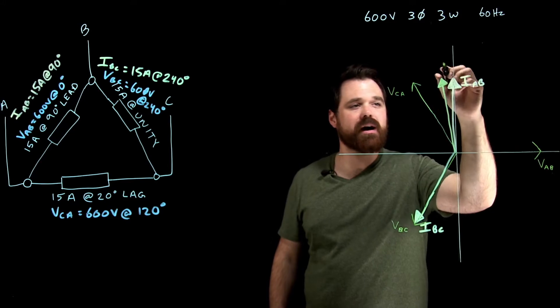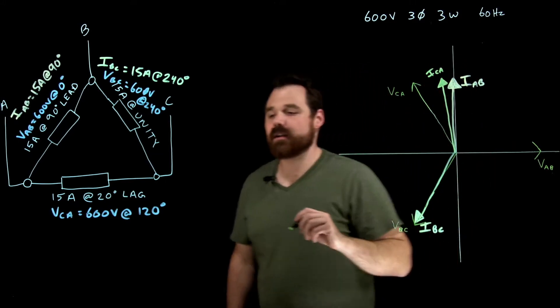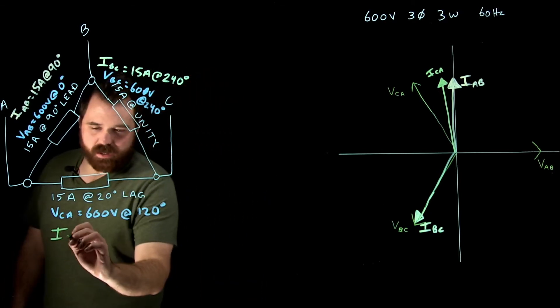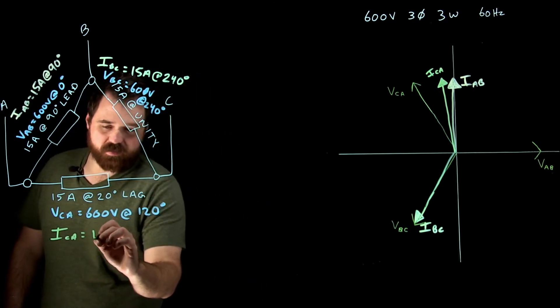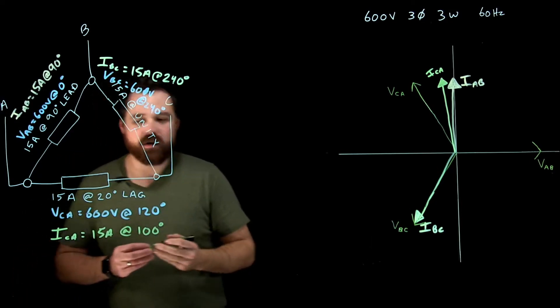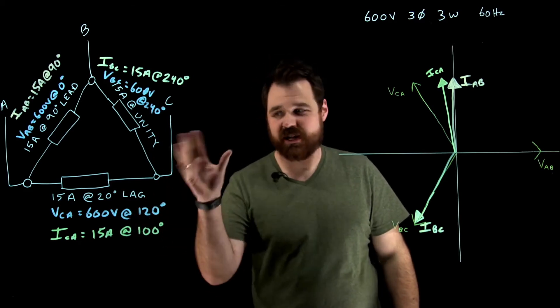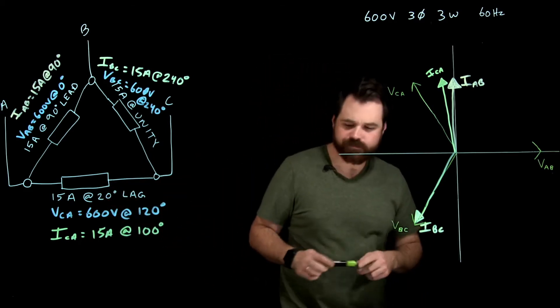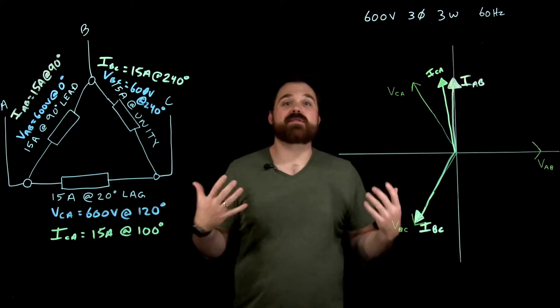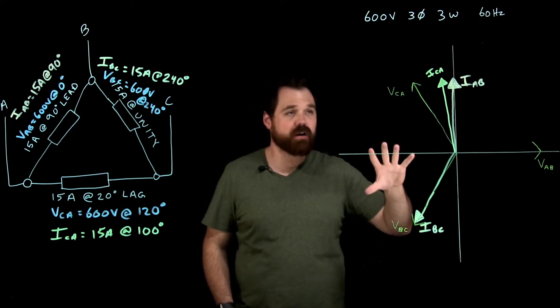So I C to A ends up being 15 amps, like we're told, at 100 degrees, which is a 20 degree lag from the voltage. So that's where that 20 degree lag comes in. Awesome. So now I have got my three phasors for my current.